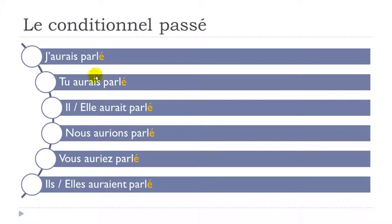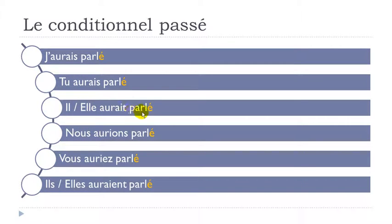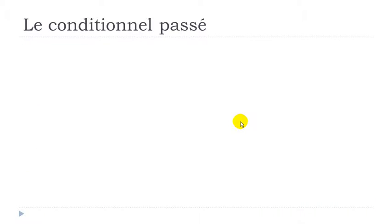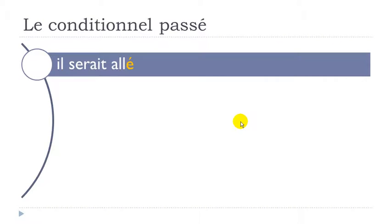One important note: when you have a normal subject-verb structure with avoir, you do not modify the participe passé. It stays as parlé — with accent aigu — whether it's singular, plural, or feminine. It does not change.